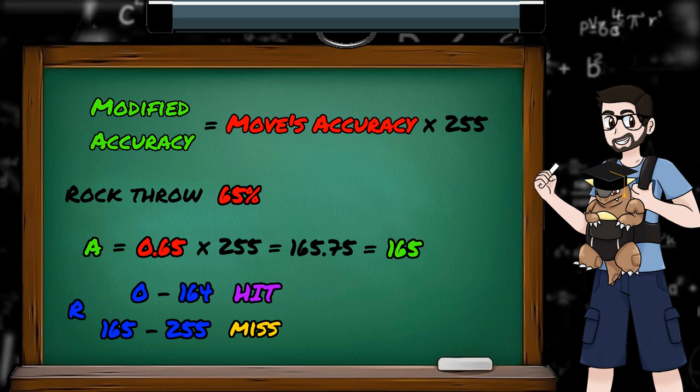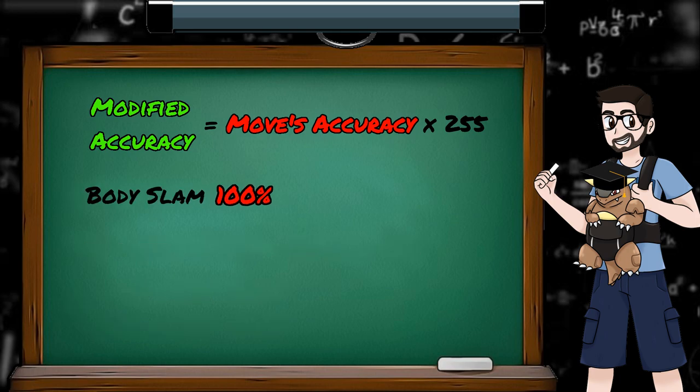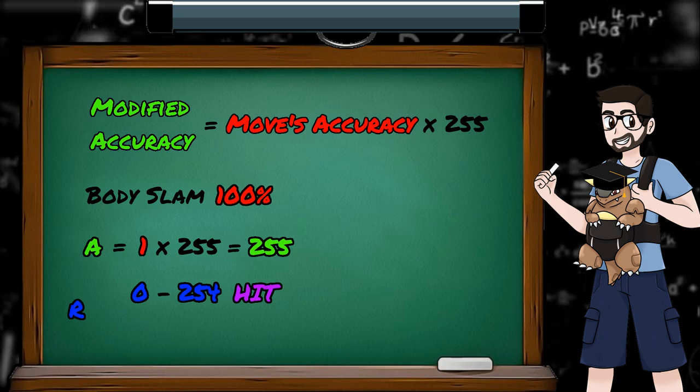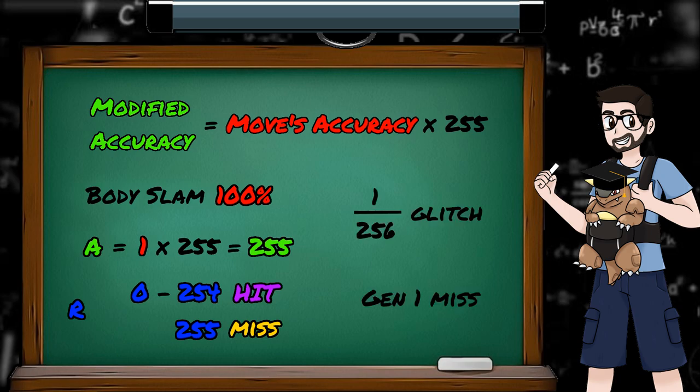This brings us onto an interesting point. Let's look at a 100% accurate move like Body Slam. Our modified accuracy value would be 1 times 255, which is 255. We then roll our random number from 0 to 255, and if our number is less than 255, we hit. The key thing here is that we're explicitly checking if R is less than A, not less than or equal to. So if we roll 255 as our random number, 255 is not less than 255, so we miss. Which means there's a 1 in 256 chance to miss a 100% accurate move, even if no accuracy or evasion modifiers have been applied. You'll have heard this referred to as the 1 in 256 glitch, or a Gen 1 miss.